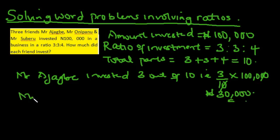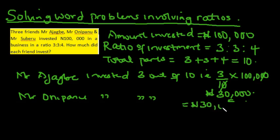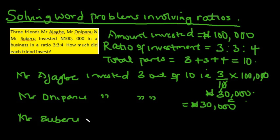Similarly, Mr. Unipan also invested 3 out of 10, so he also invested thirty thousand naira. Now for Mr. Suberu — note that in an examination you should show full working; I'm condensing here to save time — Mr. Suberu invested 4 out of 10.